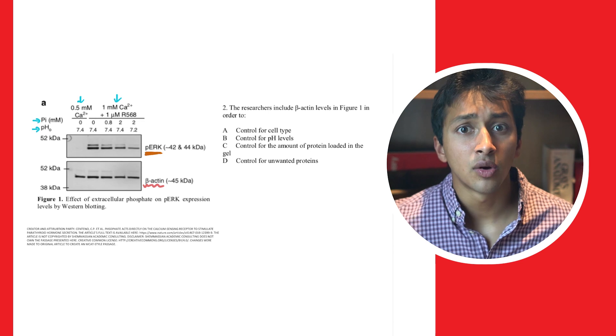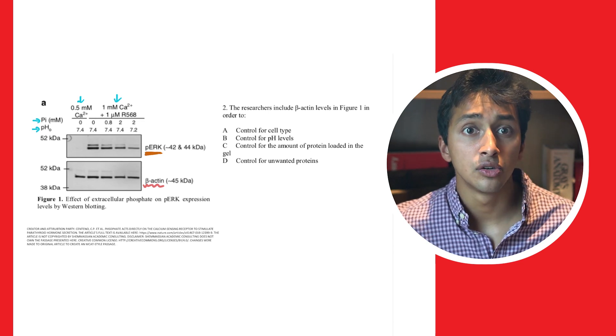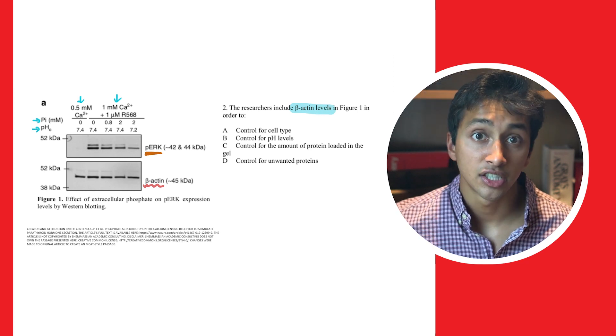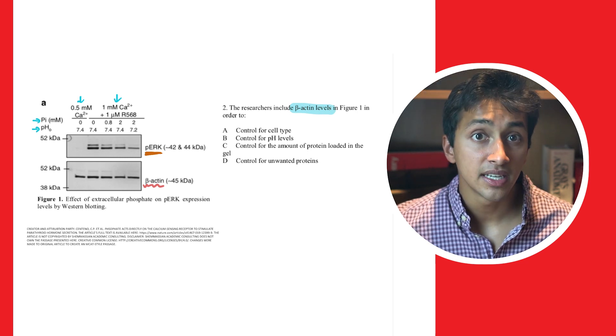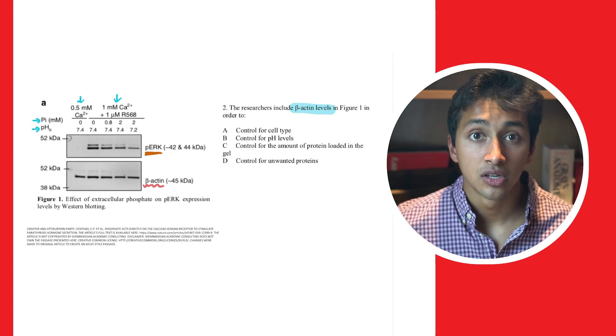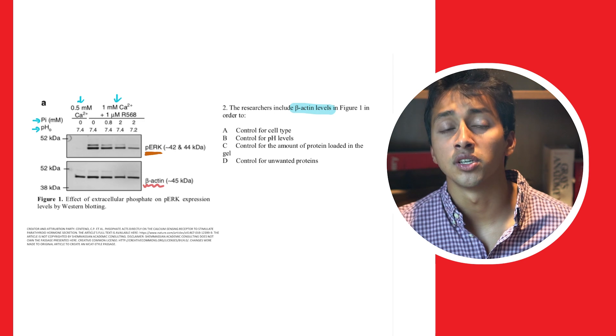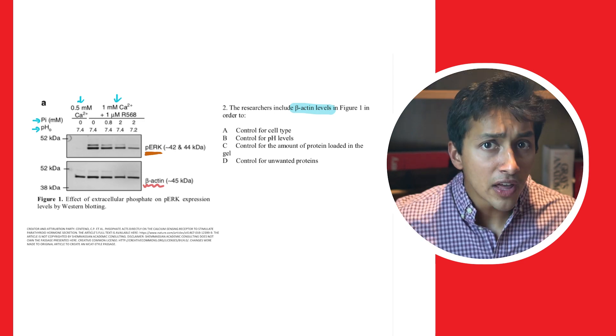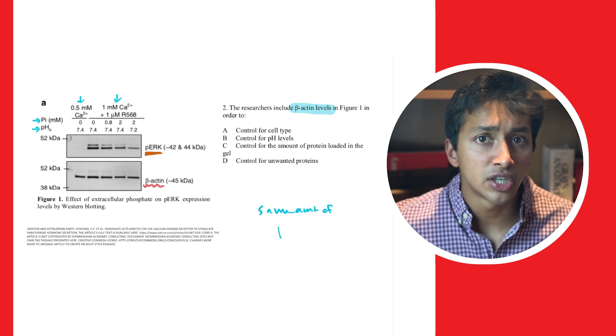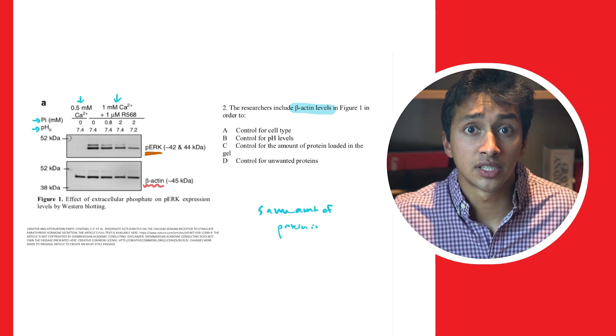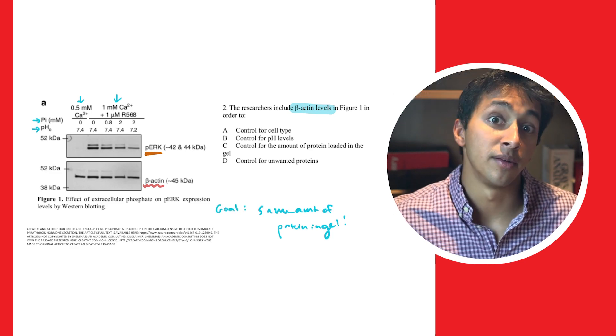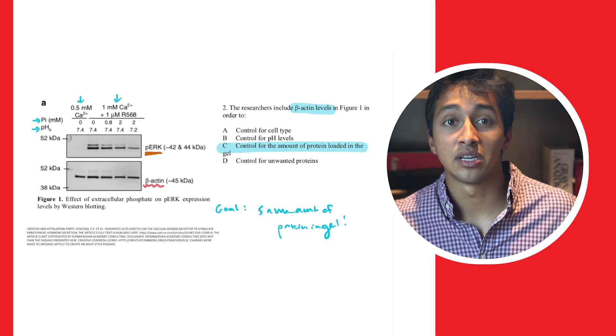Now, let's look at the question. The question asks, the researchers include beta-actin levels in Figure 1 in order to: a. control for cell type, b. control for pH levels, c. control for the amount of protein loaded in the gel, or d. control for unwanted proteins. Recall that controls are used to ensure that researchers load the same amount of protein in the gel, which in turn helps the researchers ensure that differences in their dependent variable are indeed true differences and aren't just due to experimental or random error. Therefore, the correct answer here is c.